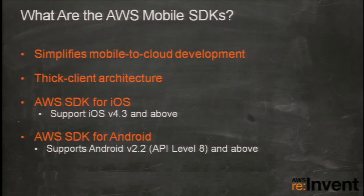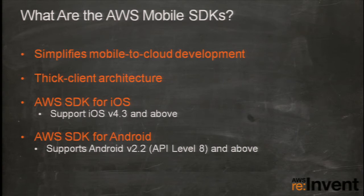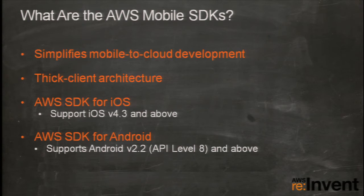The point of the mobile SDKs is to simplify mobile-to-cloud development. They're best suited for a thick-client architecture. When we say mobile SDKs, we're talking about two distinct SDKs: the AWS SDK for iOS, supporting version 4.3 and above, and the AWS SDK for Android, supporting version 2.2 (API level 8) and above. One of the big points is that these SDKs can help you build a connected mobile application without a middle tier.